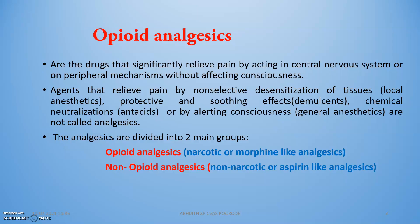Opioid analgesics are drugs that significantly relieve pain by acting at the central nervous system or on peripheral mechanisms without affecting general consciousness. Agents that relieve pain by non-selective desensitization of tissues — such as local anesthetics — protective and soothing effects like demulcents, chemical neutralization like antacids, or by altering consciousness like general anesthetics, are not called analgesics.